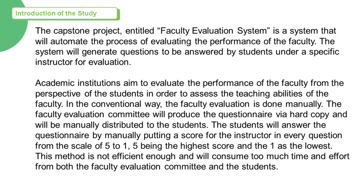In the conventional way, the faculty evaluation is done manually. The faculty evaluation committee will produce the questionnaire via hard copy and will be manually distributed to the students. The students will answer the questionnaire by manually putting a score for the instructor in every question from the scale of 5 to 1, with 5 being the highest score and 1 being the lowest. This method is not efficient enough and will consume too much time and effort from both the faculty evaluation committee and the students.